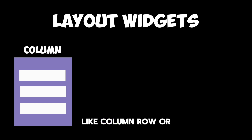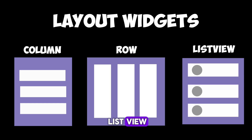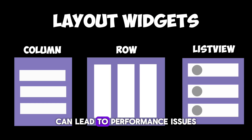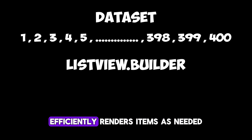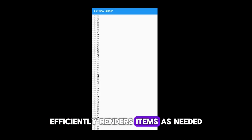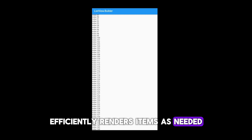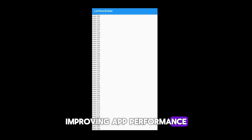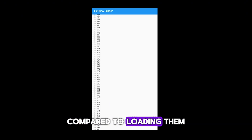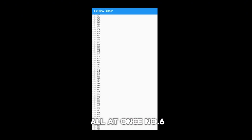Number five: inefficient use of layout widgets like Column, Row, or ListView can lead to performance issues. If you have a large data set displayed in a list, using ListView.builder efficiently renders items as needed, improving app performance compared to loading them all at once.